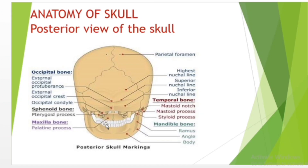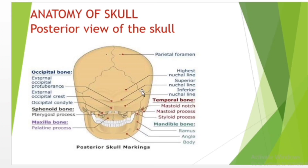Look at this — this area is the parietal foramen. It is a small foramen in the parietal bone. It is the opening for the parietal emissary vein, which drains into the superior sagittal sinus. Occasionally a small branch of the occipital artery can also pass through it. It is located at the back part of the parietal bone, close to the upper or sagittal border.